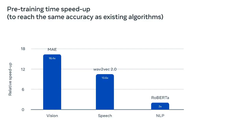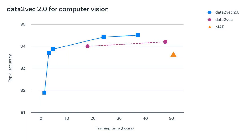We evaluated final accuracy and the time it took to pre-train the model, measuring algorithm speed on the same hardware and number of GPUs. For computer vision, we evaluated Data2Vec 2.0 on the standard ImageNet-1K image classification benchmark. Data2Vec 2.0 can equal the accuracy of masked auto-encoders (MAE) but is 16x faster, measured in wall clock time in a like-for-like setting. With more training time, it can achieve even higher accuracy while still being faster than MAE.